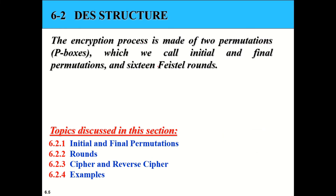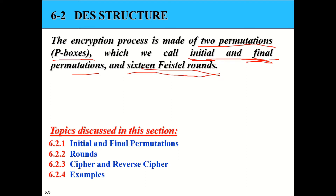DES is made up of two permutations implemented using P-boxes. These are called the Initial Permutation and the Final Permutation. The Initial Permutation is applied at the start when we have the plain text, and after passing through 16 Feistel rounds, the Final Permutation is applied.